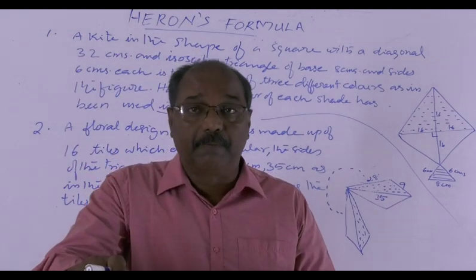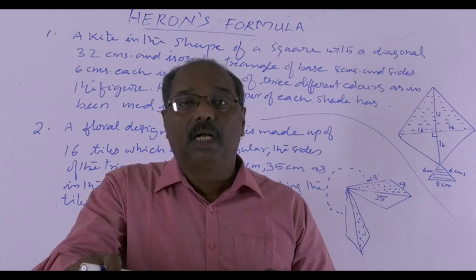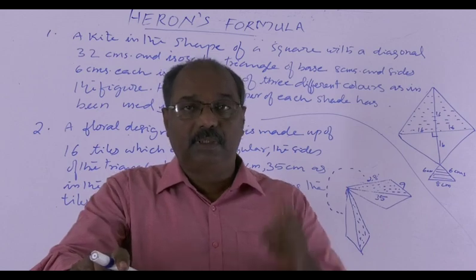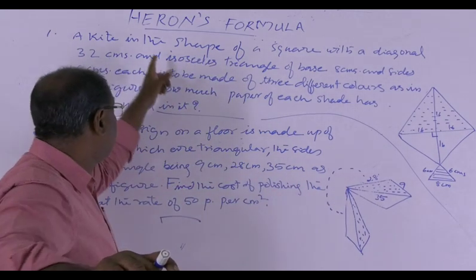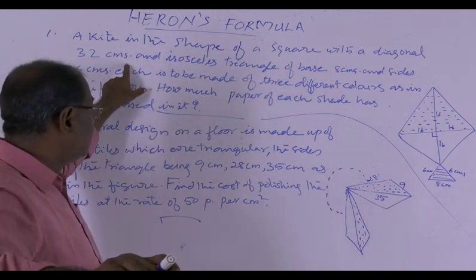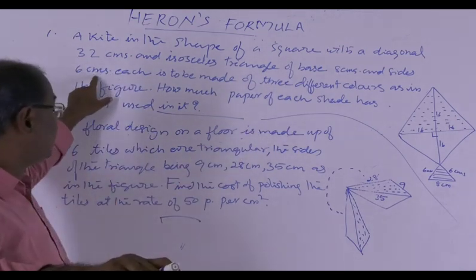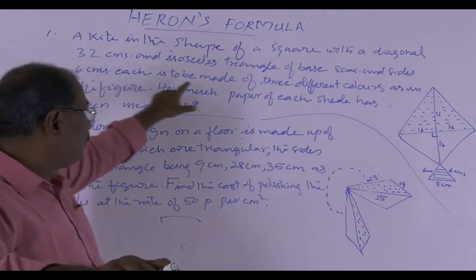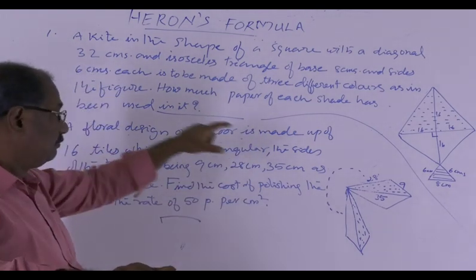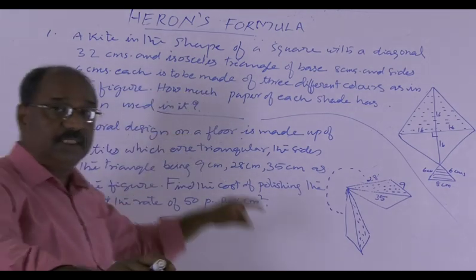Now, a set of two problems from Heron's formula. I will only explain how to solve these problems. The first problem is this: a kite in the shape of a square with a diagonal of 32 cm and an isosceles triangle. Each is to be made of three different colours as in the figure. How much paper of each shade has been used in it?